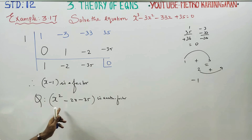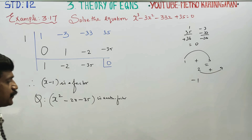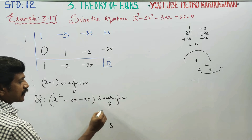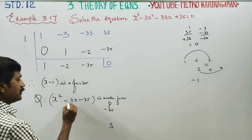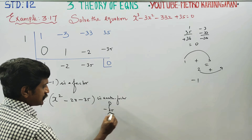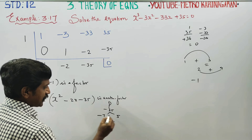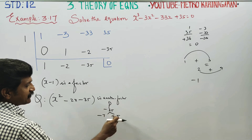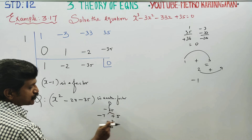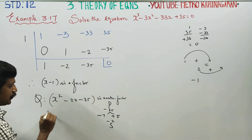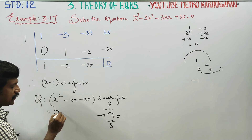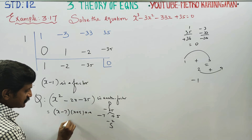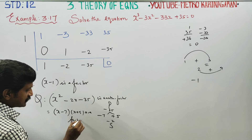Now we factorize x² - 2x - 35 using the product-sum method. Product is -35, sum is -2. The numbers 7 and 5 satisfy this: 7 × (-5) = -35, and 7 + (-5) = 2... with correct signs: -7 and +5. So x - 7 and x + 5 are factors.